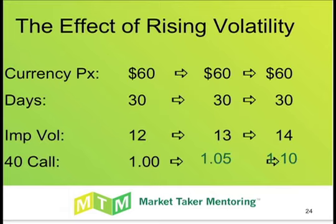Let's say we have a currency price trading at 60 bucks, there's about 30 days till expiration, and the price of the currency happens to not change at all, but later today implied volatility rises from 12 to 13. We would see the price of the 60 call rise from $1 to $1.05. And then as implied volatility rises yet another point, we would see the price of the 60 call rise from $1.05 to $1.10.